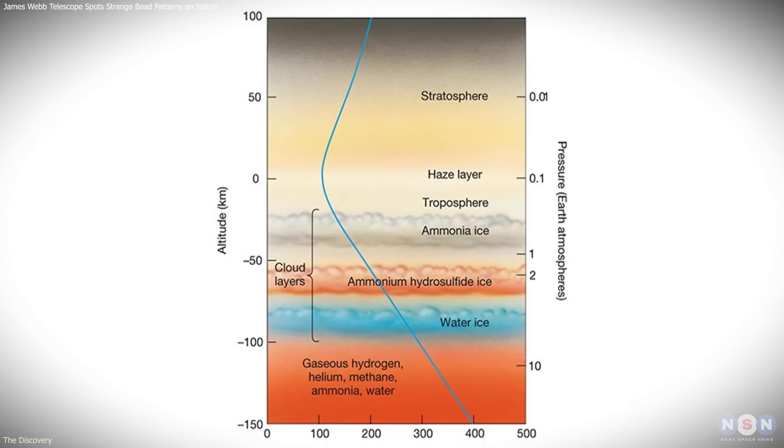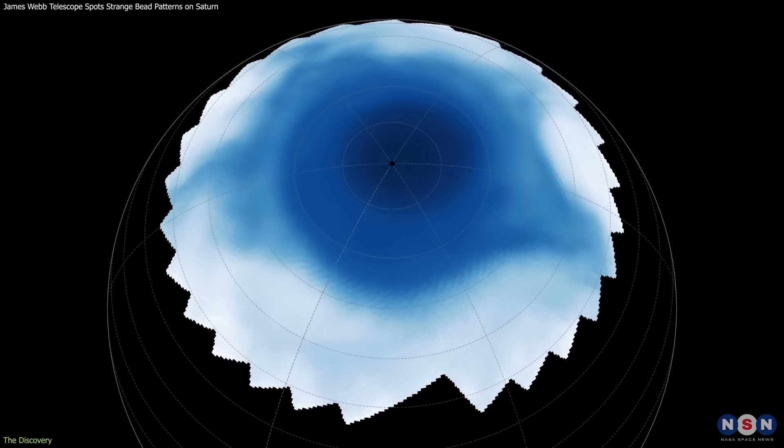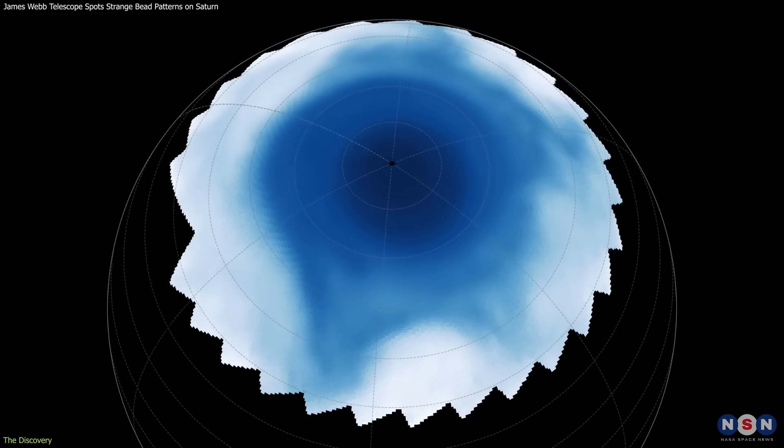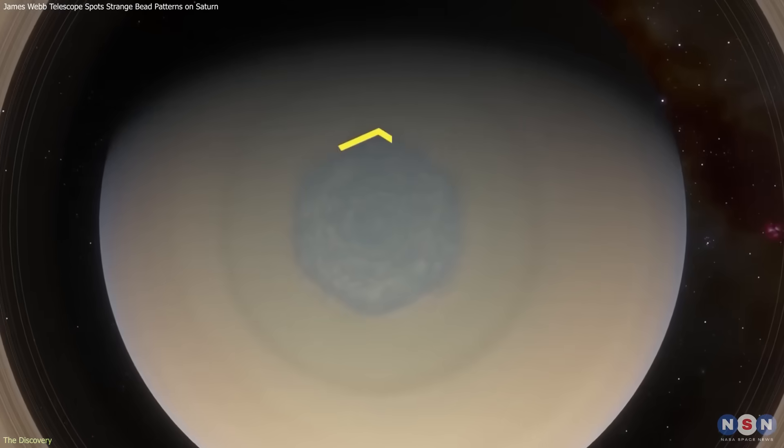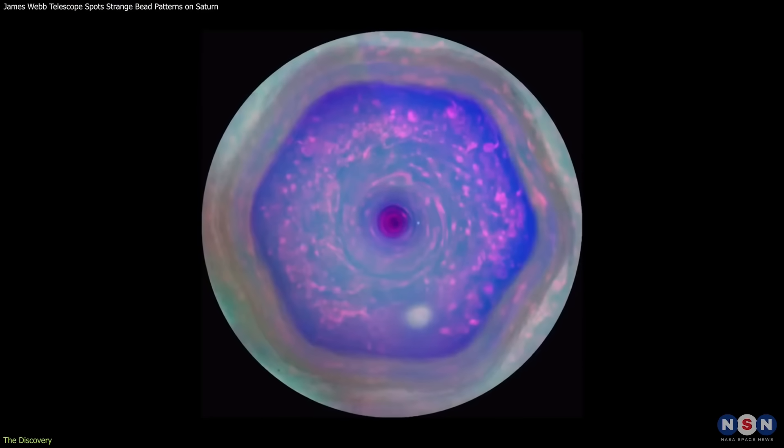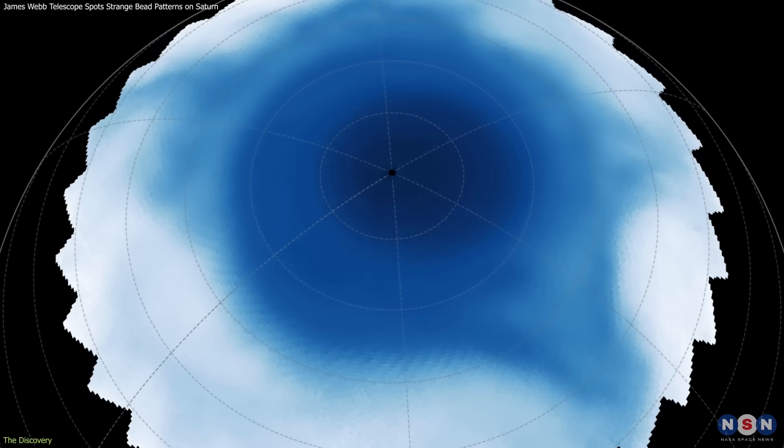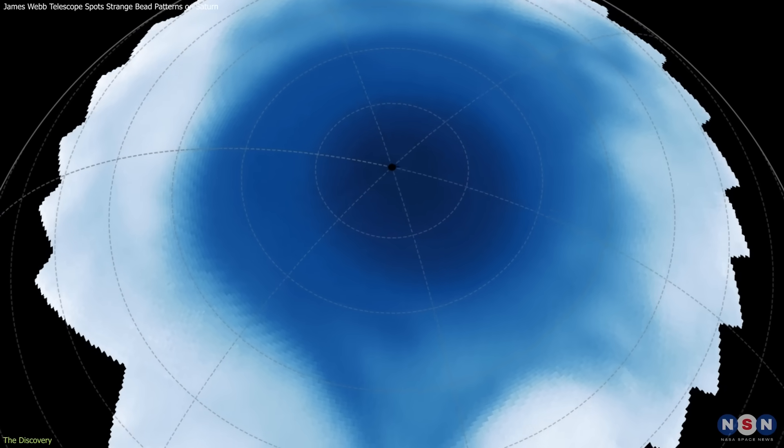Meanwhile, in the stratosphere below, Webb detected an asymmetric structure—a star-like pattern with four arms radiating from the pole. Unlike its well-known hexagon, which is six-sided and persistent, this star was uneven and lopsided, reaching toward the equator in irregular arcs.